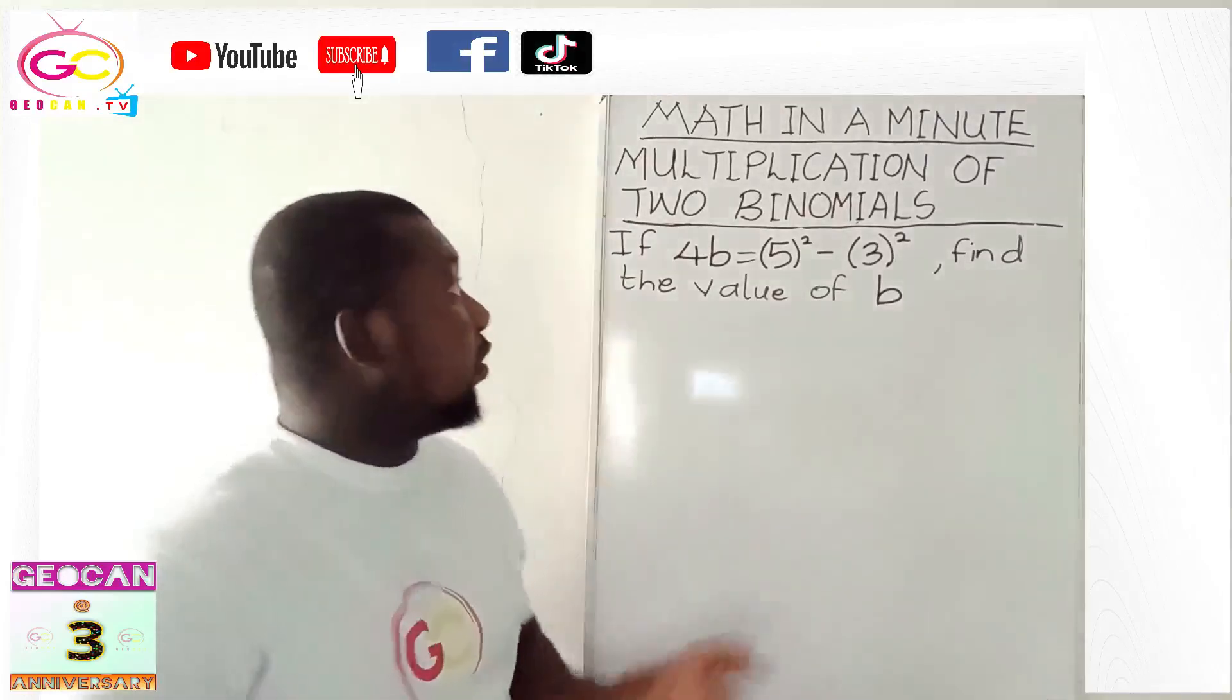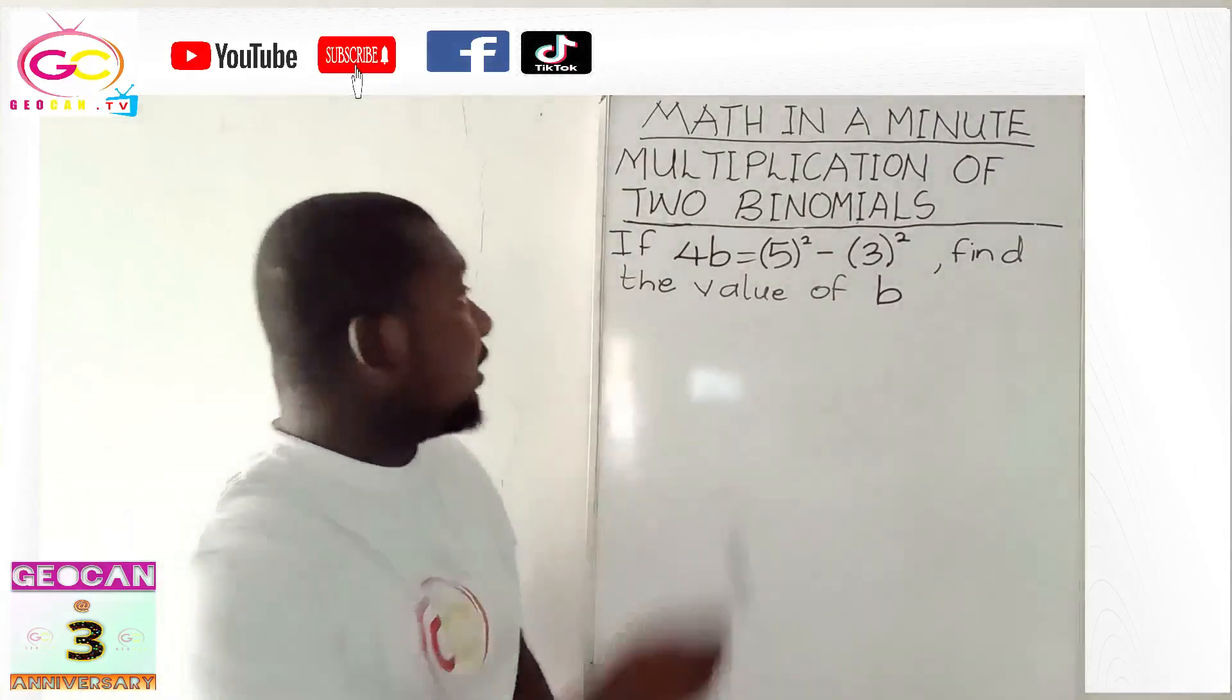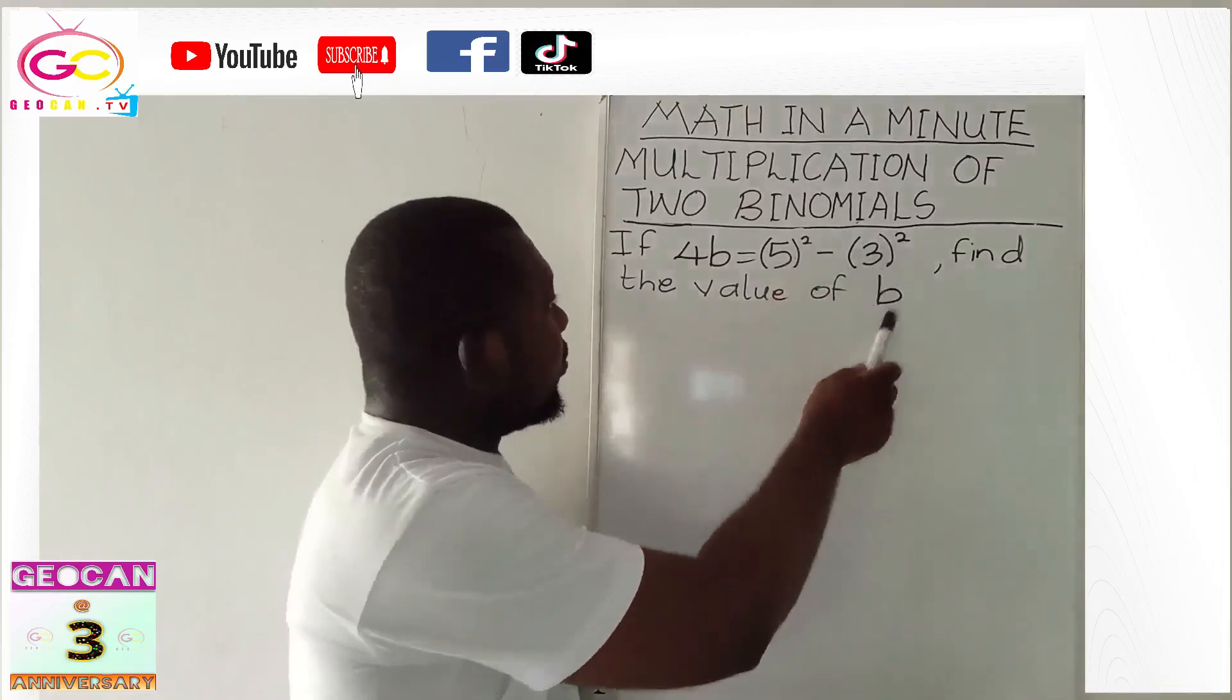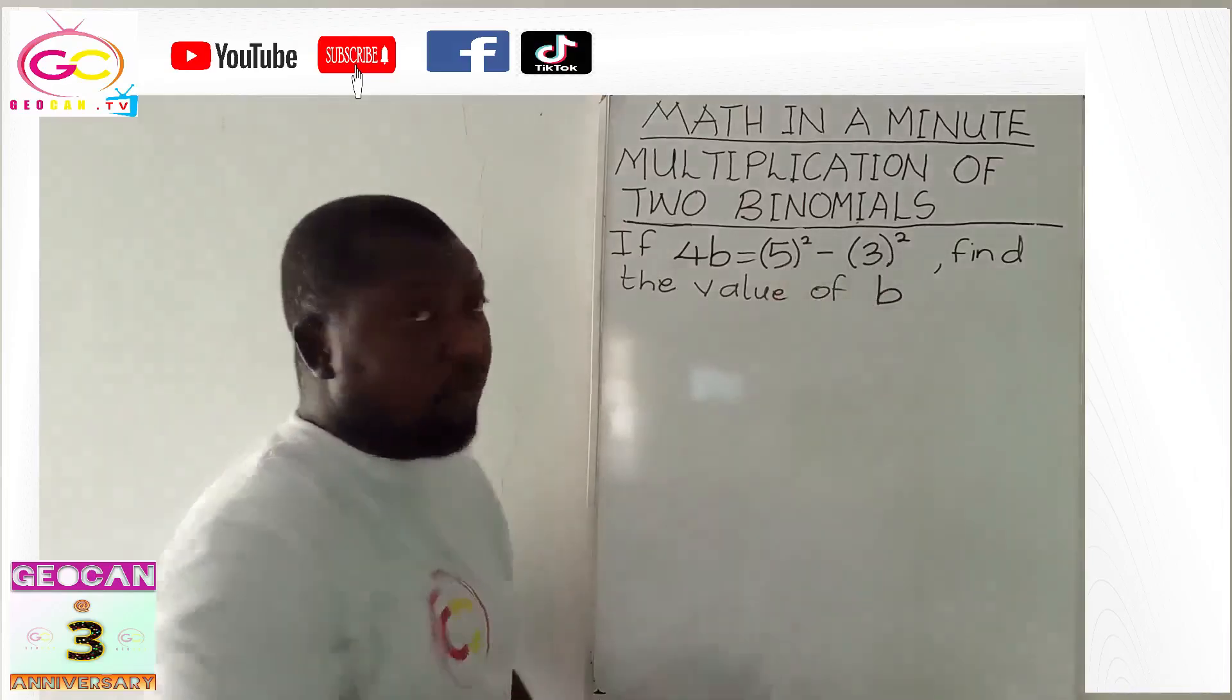Let's start this particular question based on multiplication of two binomials. If 4b is equal to 5 raised to the power 2 minus 3 raised to the power 2, find the value of b.